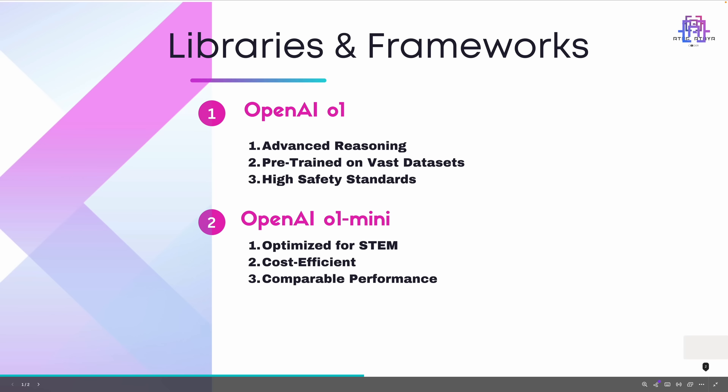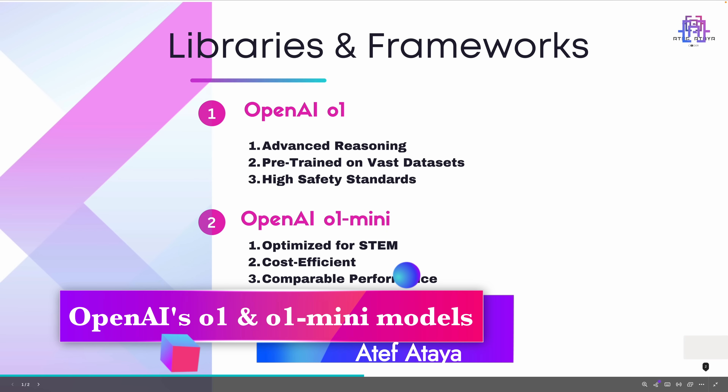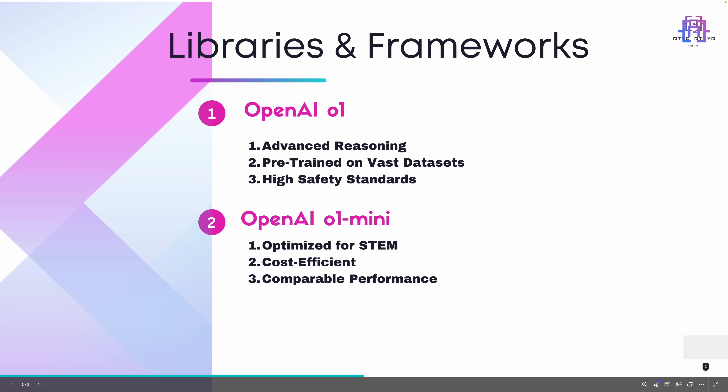Let's break down the highlights. The o1 models are designed to excel in tasks requiring deep reasoning and broad world knowledge. They are pre-trained on vast datasets, ensuring strong performance across a wide variety of domains, with high safety standards and enhanced alignment techniques making them robust against harmful prompts. On the other hand, OpenAI o1 mini is optimized for STEM — specifically trained for tasks like mathematics, coding, and STEM reasoning. It is very cost-efficient, up to 80% cheaper than o1 and o1 preview, making it ideal for budget-conscious projects, while achieving nearly the same benchmarks as o1 on reasoning-heavy tasks.